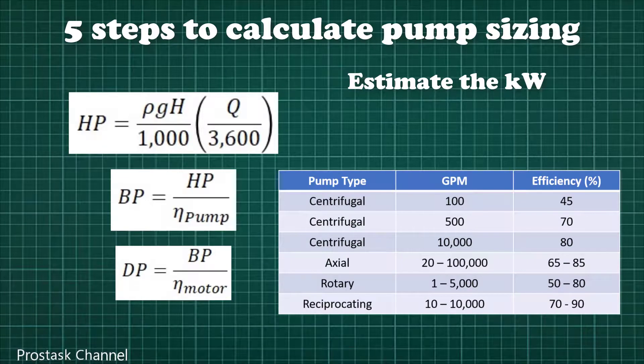For example, centrifugal type is between 45 to 80 percent, axial type is between 65 to 85 percent, rotary type is between 70 to 90 percent.